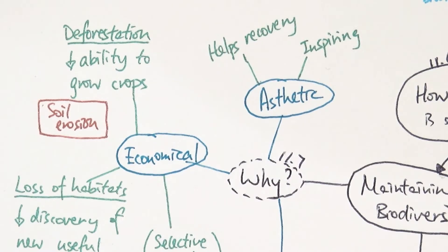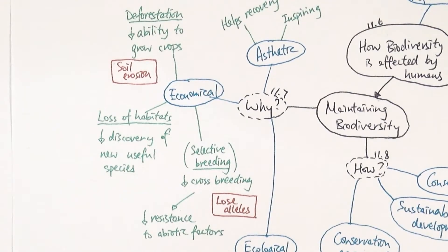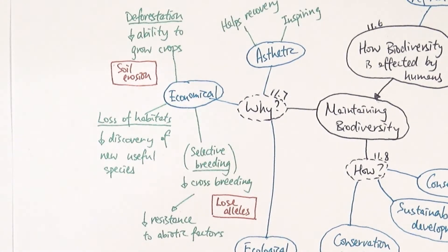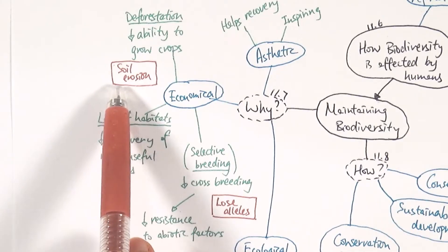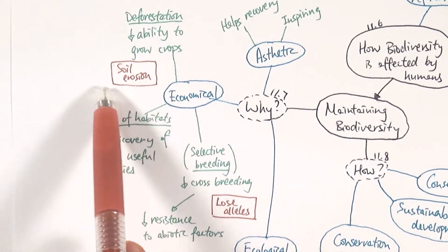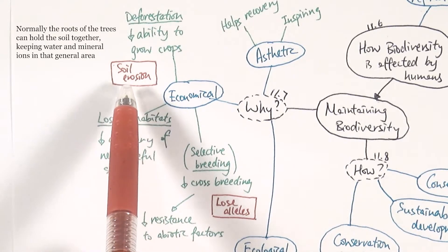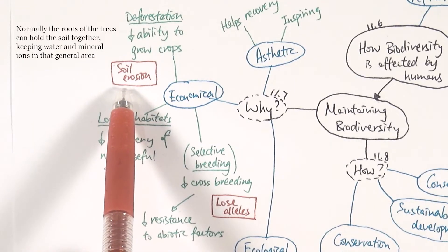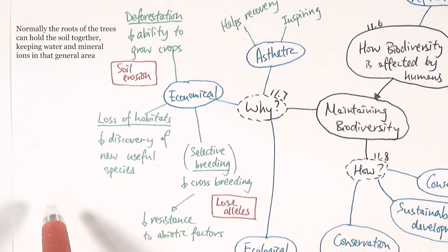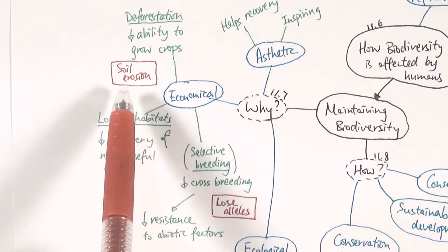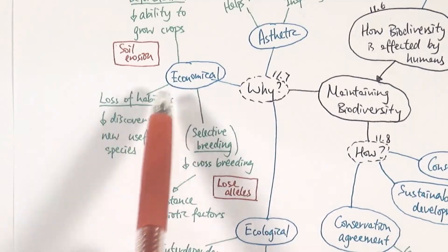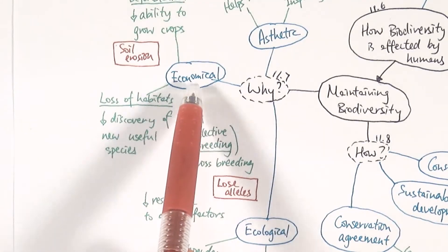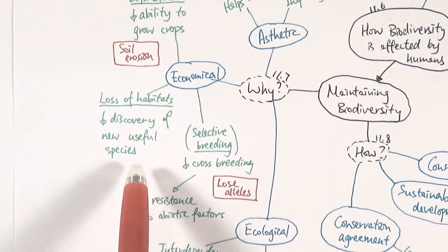For economical reasons: if we keep up with deforestation for various purposes, we decrease the ability to grow crops because deforestation leads to soil erosion. Soil erosion causes a loss of mineral ions and nutrients in the soil, which hinders the ability to grow healthy crops, leading to a loss of crops and clear economical consequences.